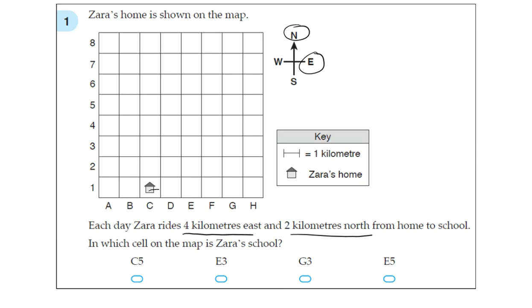So 1, 2, 3, 4. And we know we just go one space across because of this. And 2 kilometers north, 1, 2. So the school is here. So what do we do? First of all, we go across and we get to G and then we do the numbers, 3. So G3.